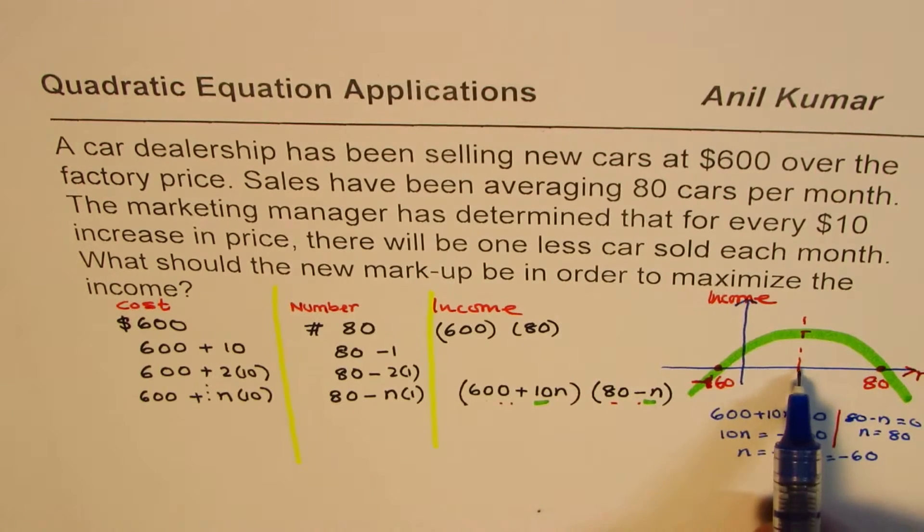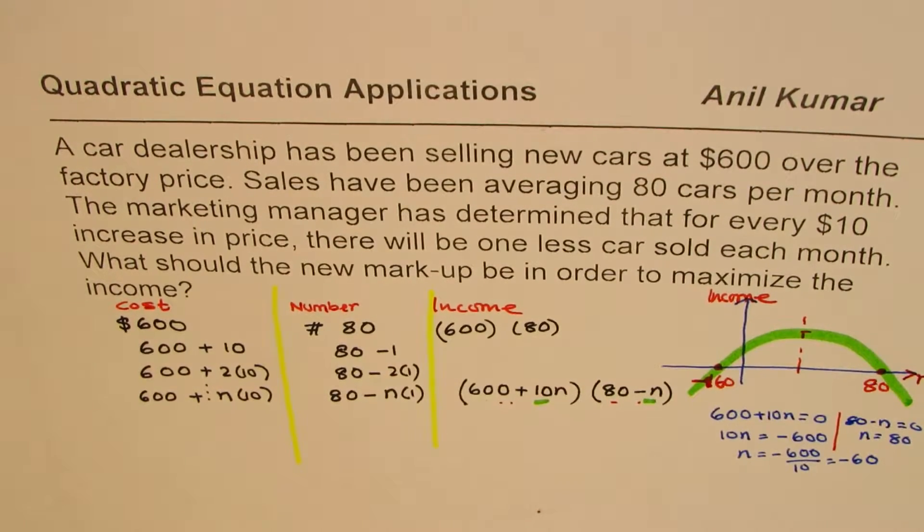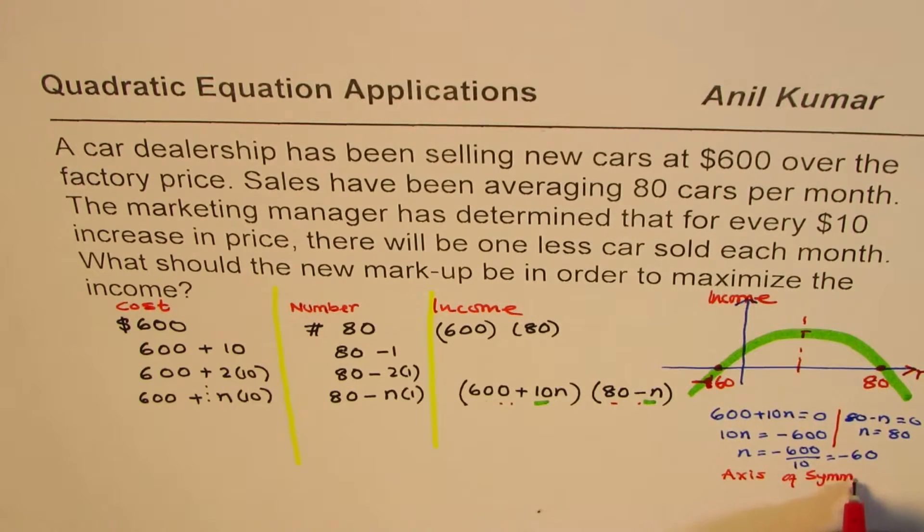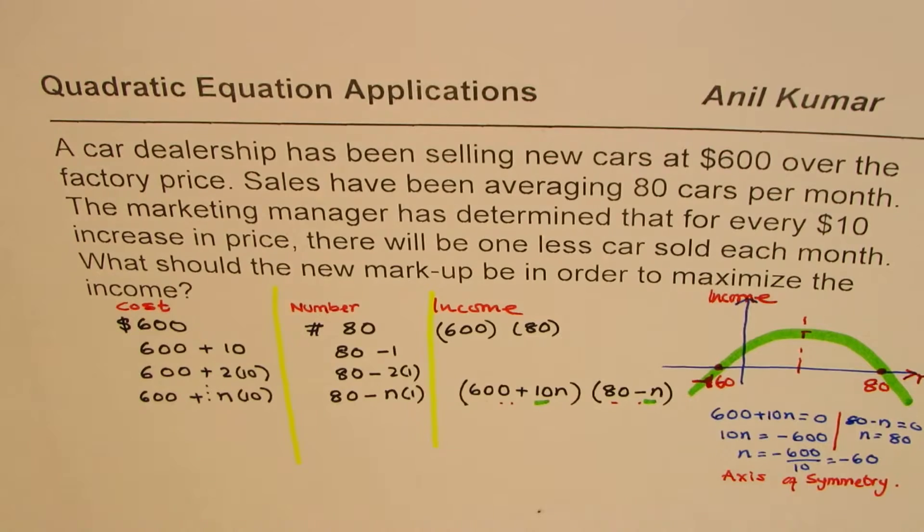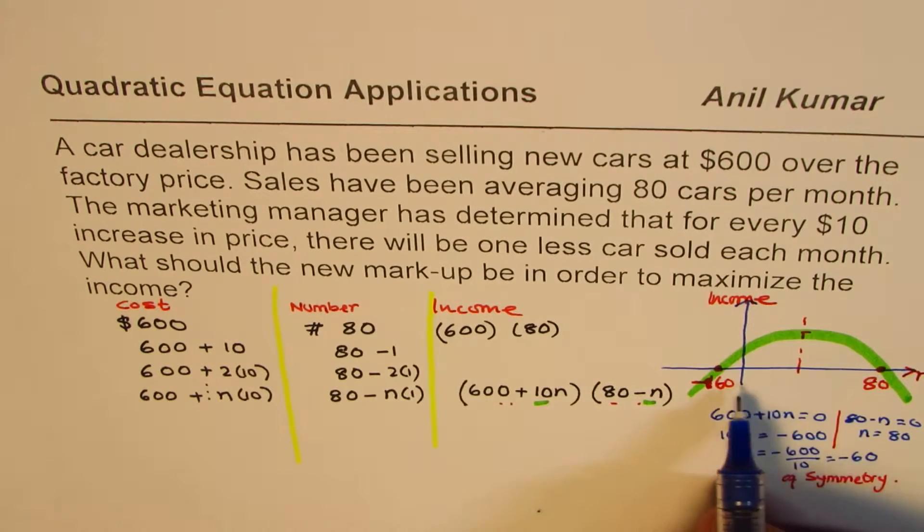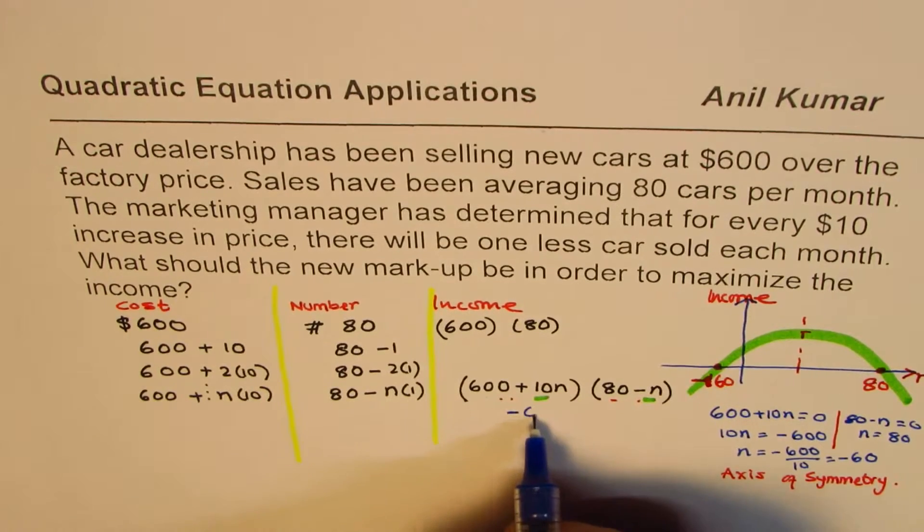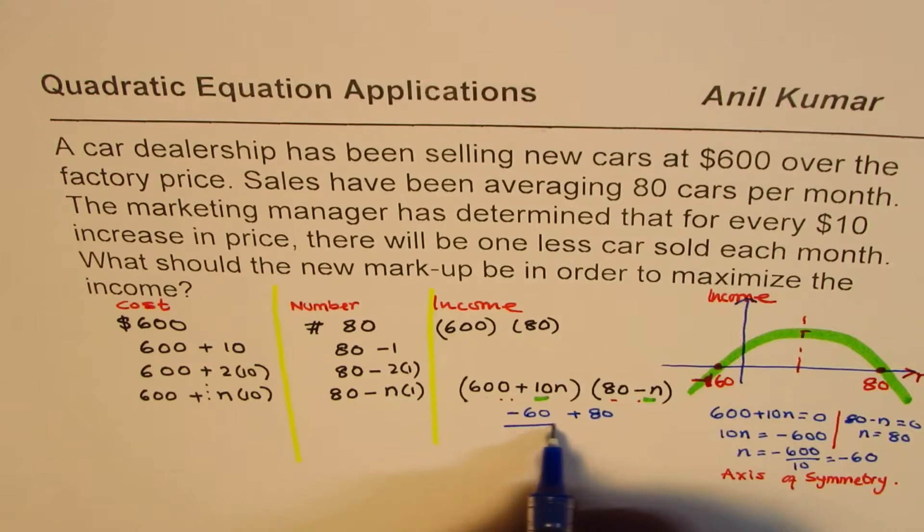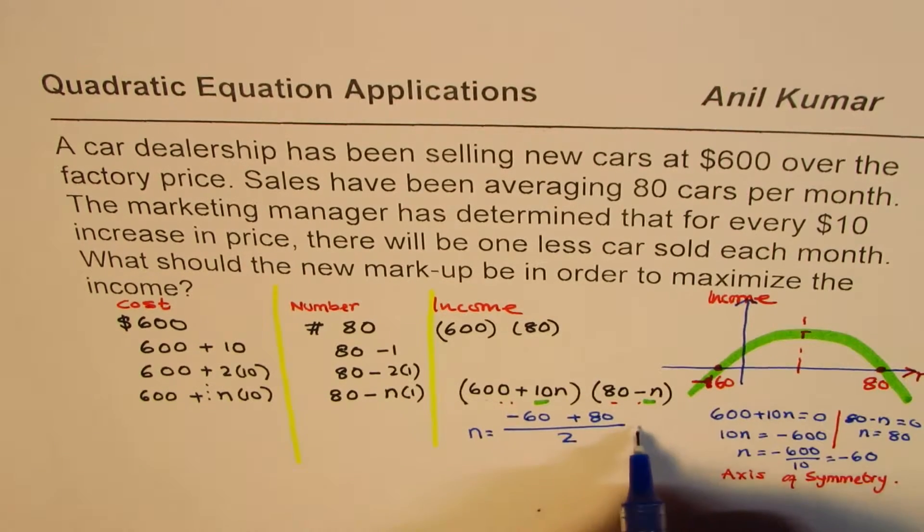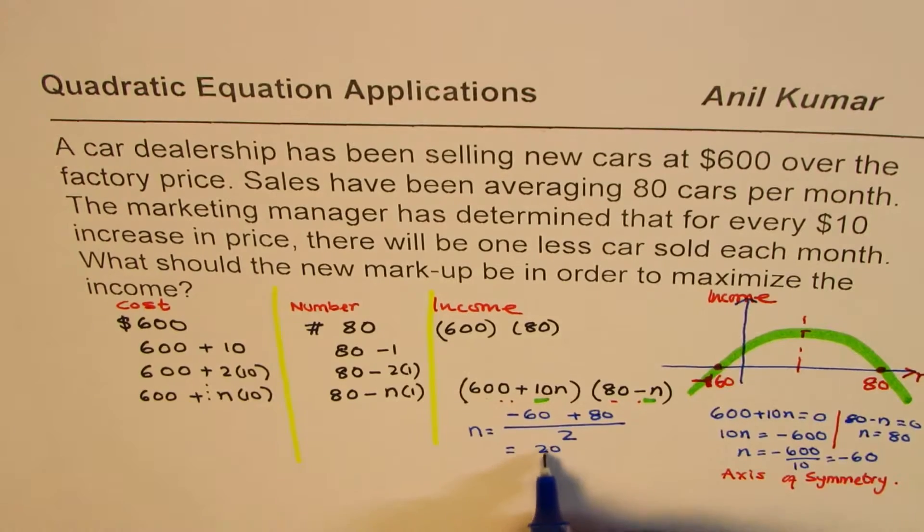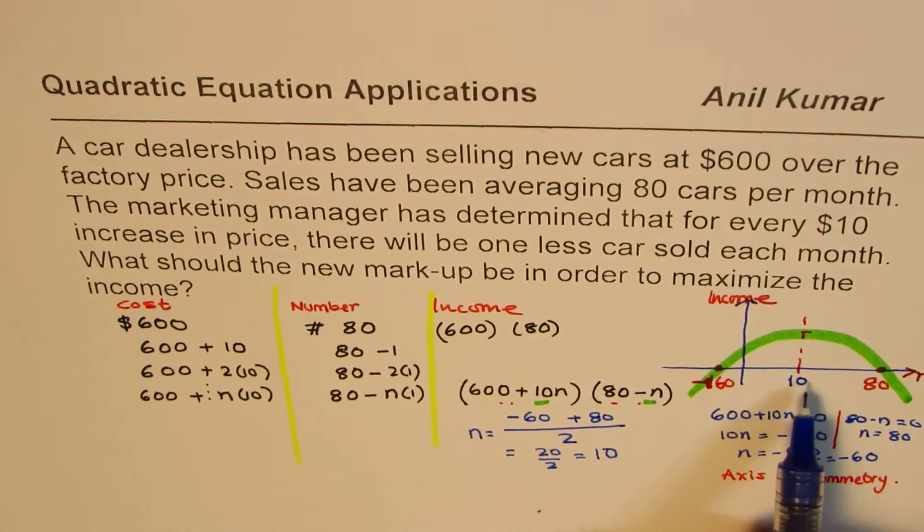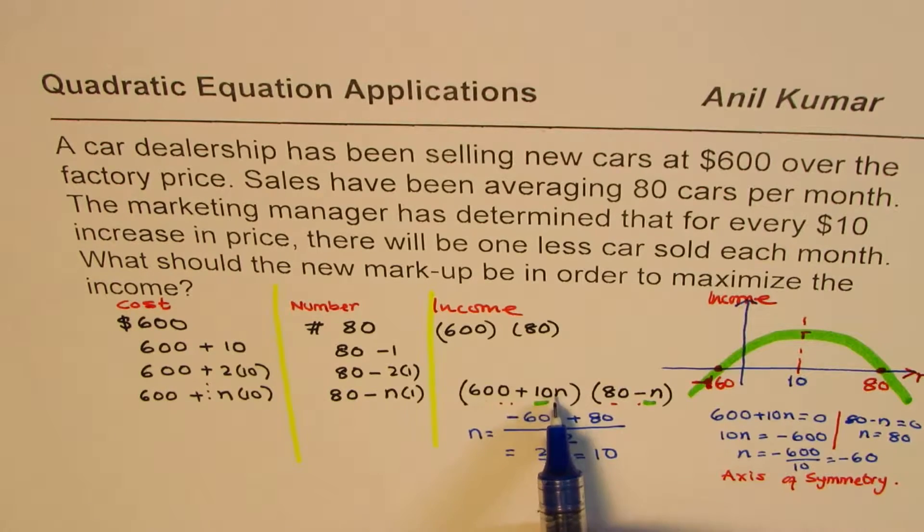Now then, where should the maximum be? It will be at the axis of symmetry, the midway between them. So we have to find the axis of symmetry. So whenever you are given quadratic equation in factored form, you could use axis of symmetry, which is at midway. That is to say, average of these two. So what we can do is, zero from here is at minus 60, zero from there is at plus 80. We can add them up and divide by 2. So that gives us the value of n for axis of symmetry. This is indeed equals to 20 divided by 2, or just 10. So this happens to be at 10.